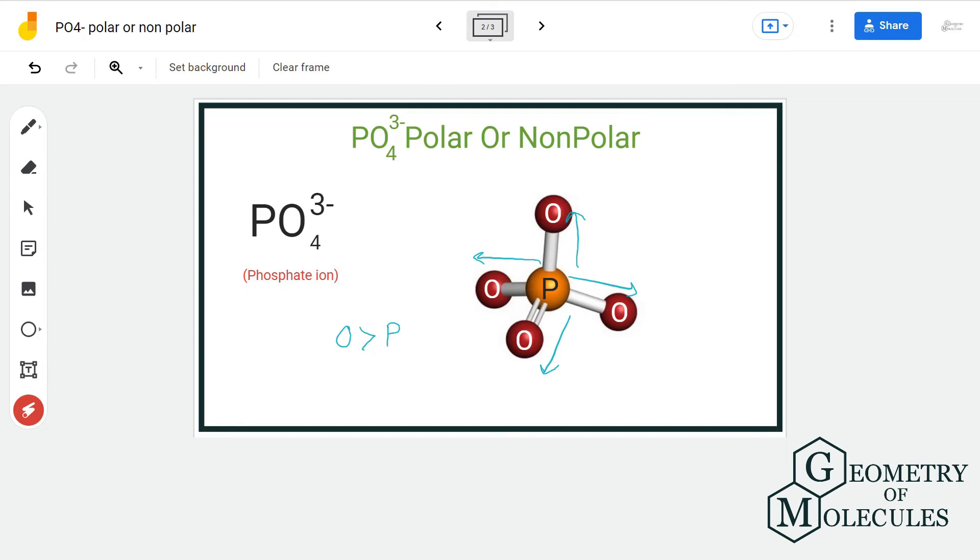But as the distribution of electrons is quite symmetrical, there will be no net dipole moment in this molecule. The individual dipole moments will get cancelled due to the arrangement of atoms in the 3D space.